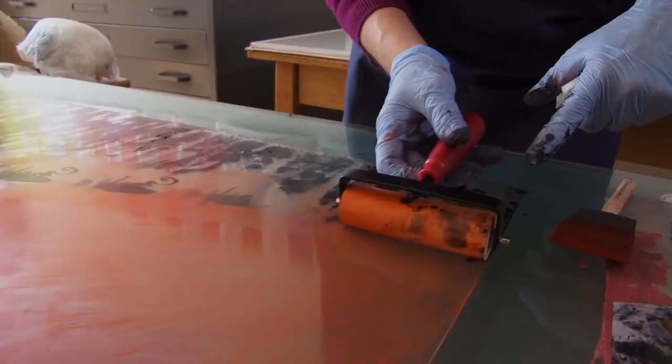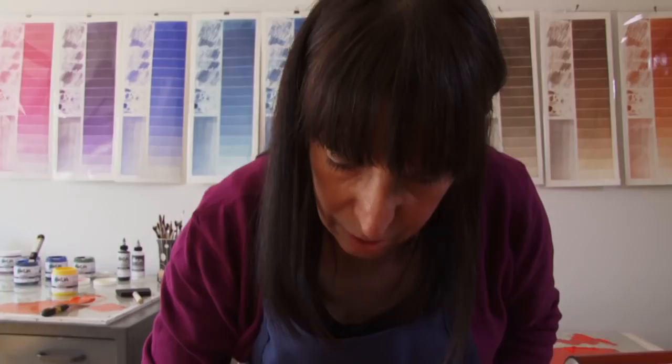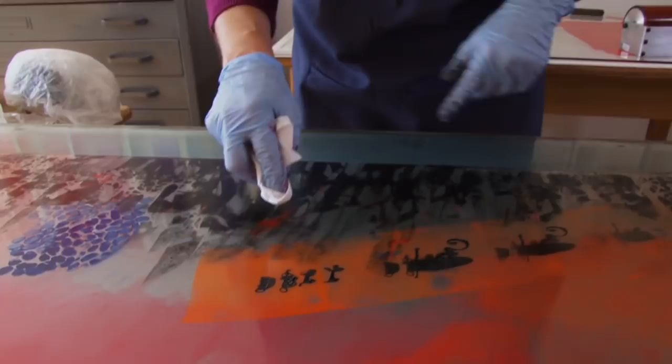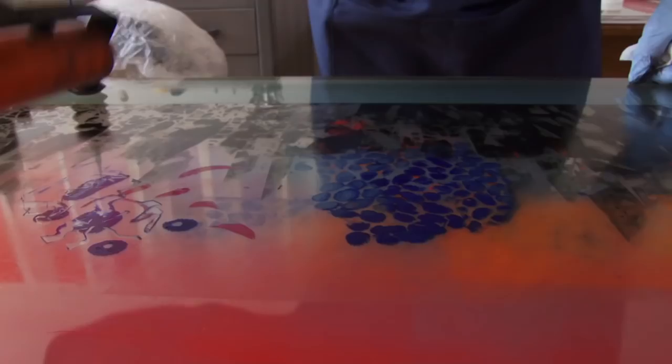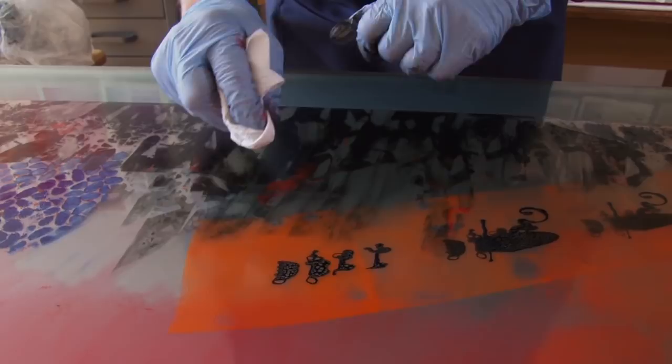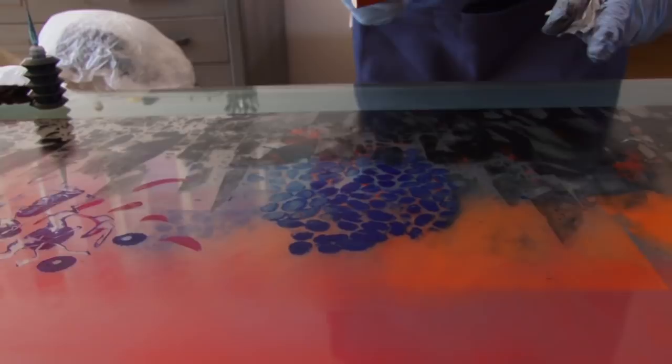I like those accidents that happened. Oh, I love what happened in here. Look at that. Those are the kind of things that you really can't plan on. Akua liquid pigment is very thin, and Akua Intaglio is thicker, and they resist one another.